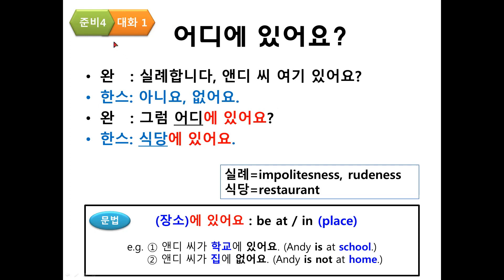자, 오늘은요, 준비 4, Getting ready you need number 4, 대화 1, Dialogue 1. 제목은 어디에 있어요? The title is, where is he, she, or it? 어디에 있어요?